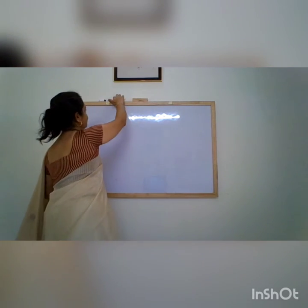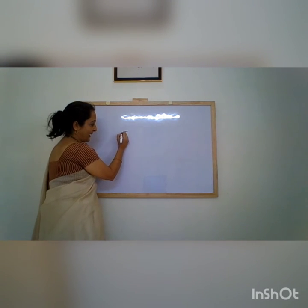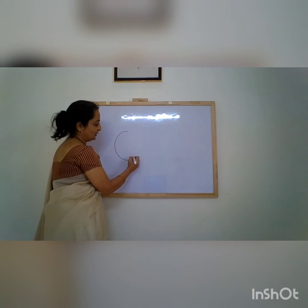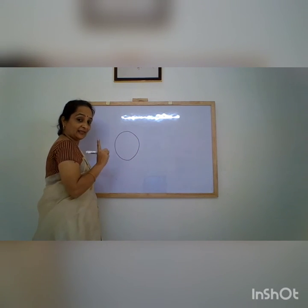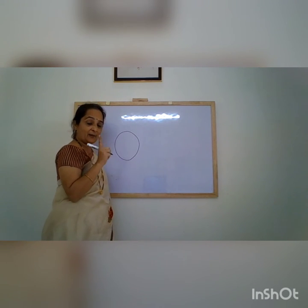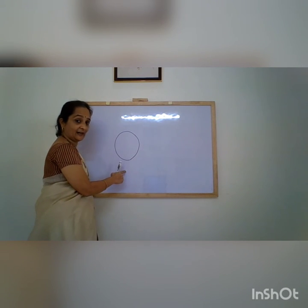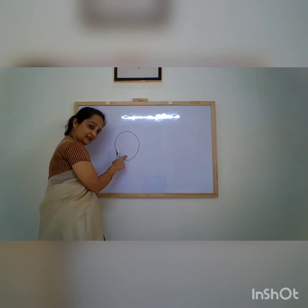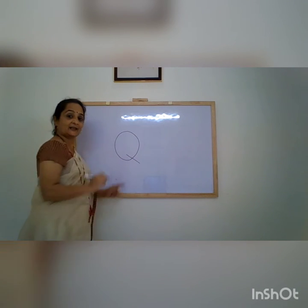Let me show you. You start from up, go down making a backward curve like a C. Then you go up and close the oval. Then a slanting line — remember children, it has to be a slanting line. No standing line here. It has to be a slanting line which goes from inside out. This is letter Q.